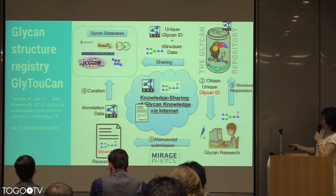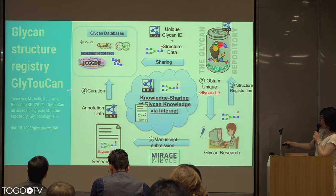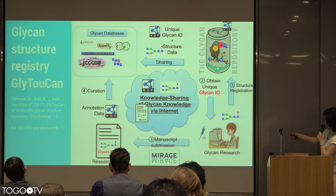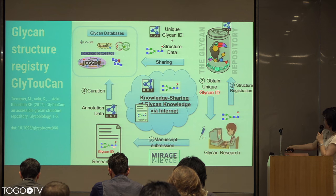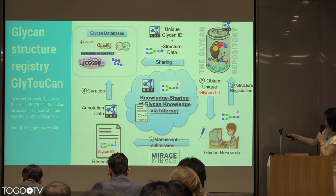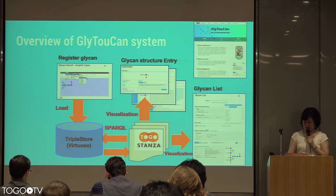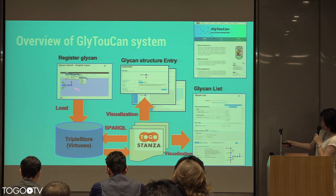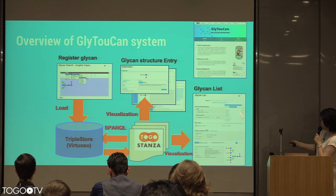Two years ago, we developed this GlyTouCan registry — GlyTouCan is the PDB for glycans now. We have these glycan structures that can be registered and given a unique glycan ID based on WURCS comparison strings. These will be referenced in manuscripts, curated into databases, and shared, while also being available from GlyTouCan. The GlyTouCan system consists of a triple store — it's all in RDF. Users can register glycans from the UI or from text file upload. We used SPARQL to produce the webpages using TogoStanzas. We have glycan structure entries so you can see each individual entry, all based on SPARQL.